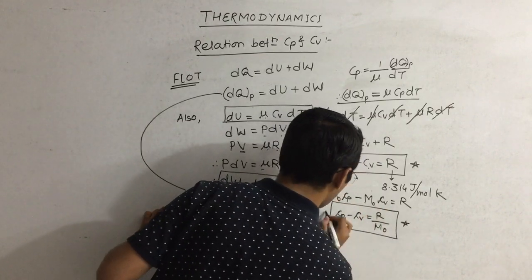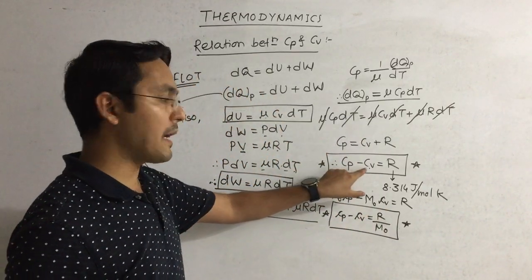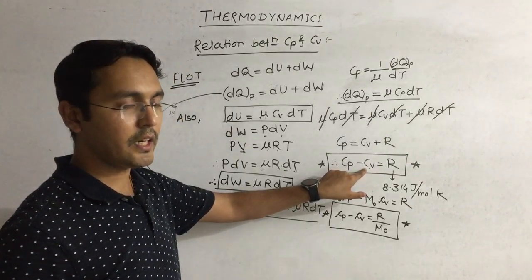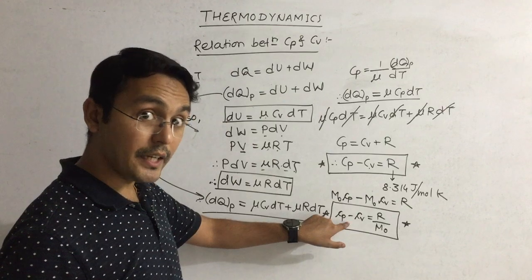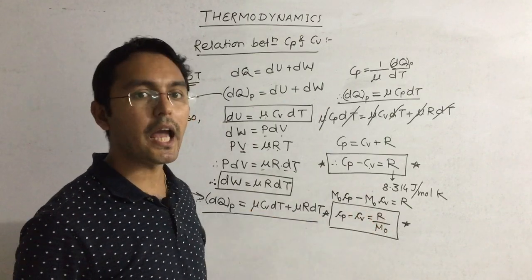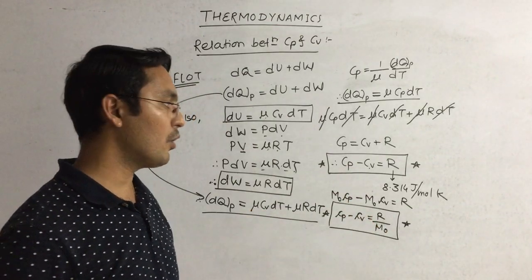This is another important relation. Capital Cp minus capital Cv, the difference of two molar specific heats, is equal to R. And small cp minus small cv, the difference of two specific heats, is equal to R upon m0. You should remember both of these.